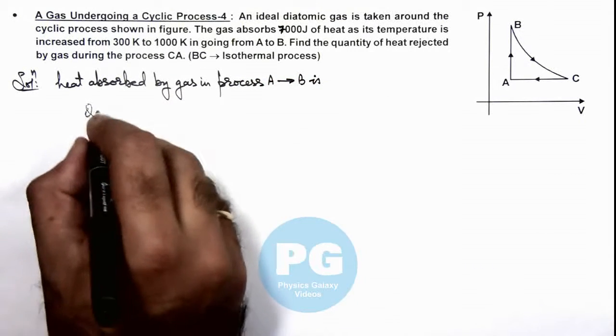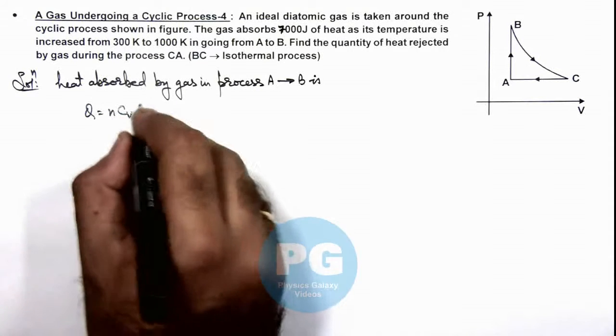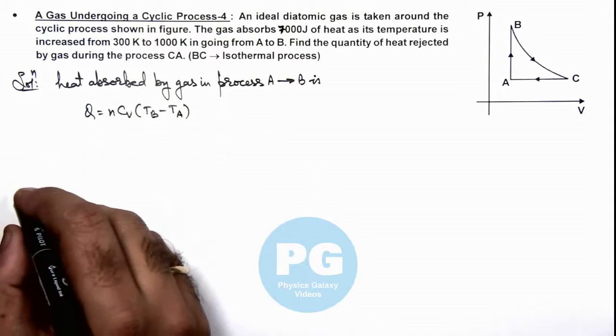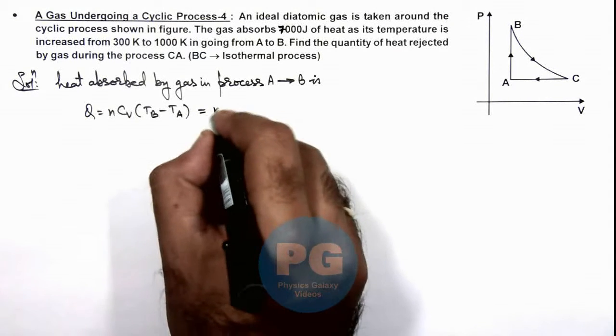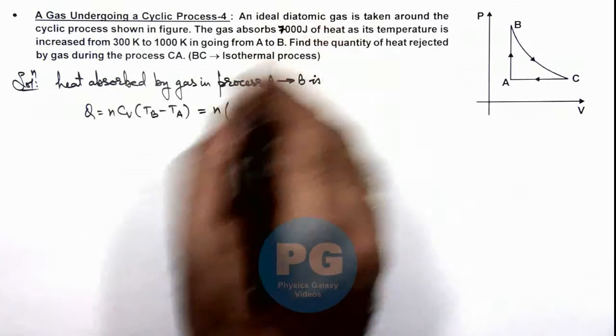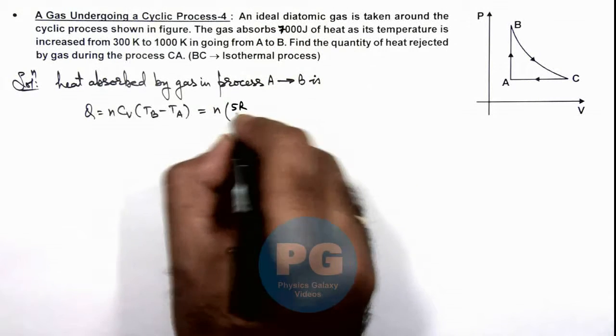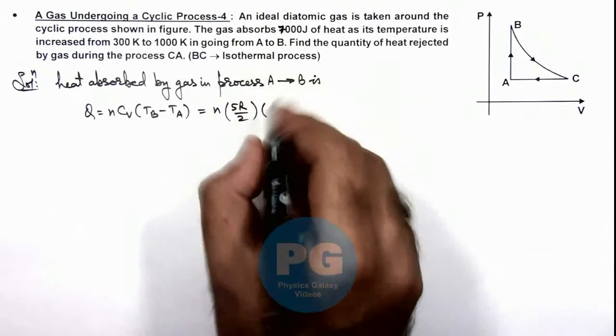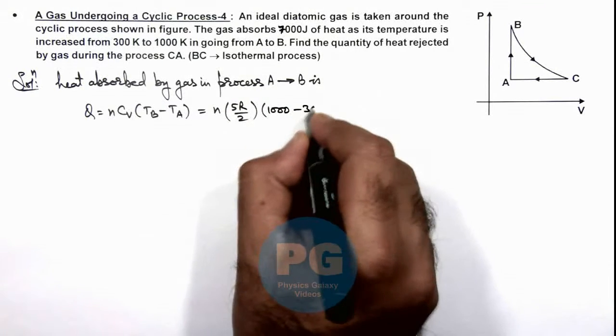This heat absorbed we can write as nC_v(T_B - T_A). So in this situation if we substitute the values, n C_v we can write for a diatomic gas as 5R/2 multiplied by temperatures of A and B, which are given as 1000 minus 300.